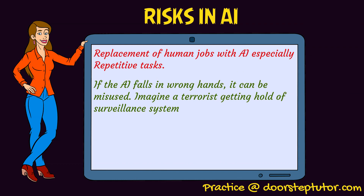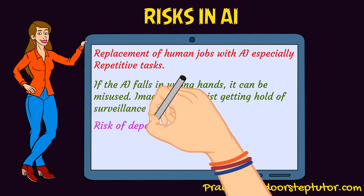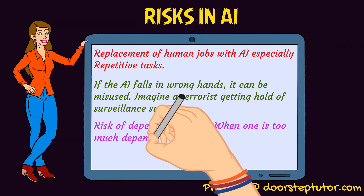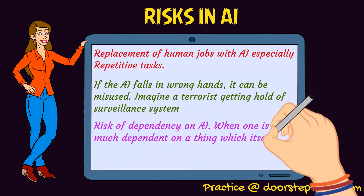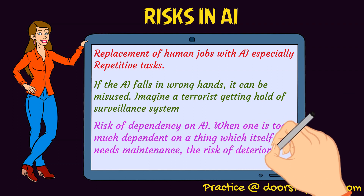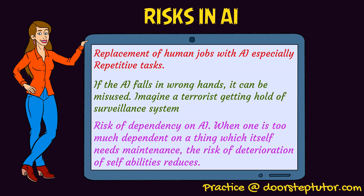For example, if India is surveilling a neighboring country that promotes terrorism, and that surveillance system falls into the hands of a terrorist group, they would start surveilling our country. Third, there is the risk of dependency on AI. When one becomes too dependent on AI, we become very lazy and this leads to deterioration of our own abilities — our mind and thinking abilities.